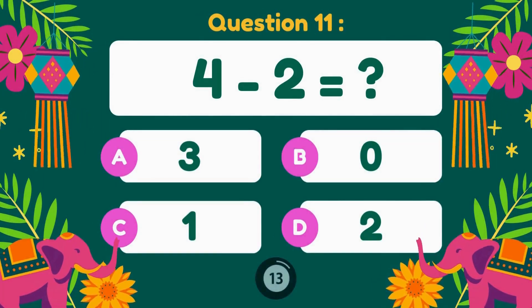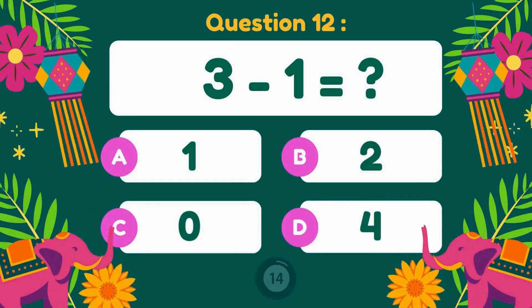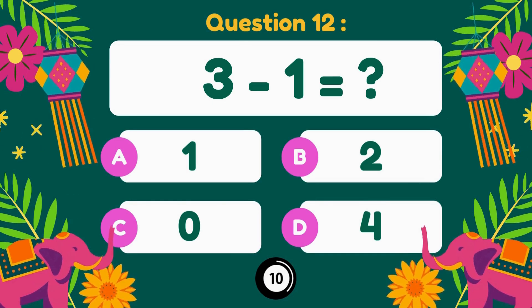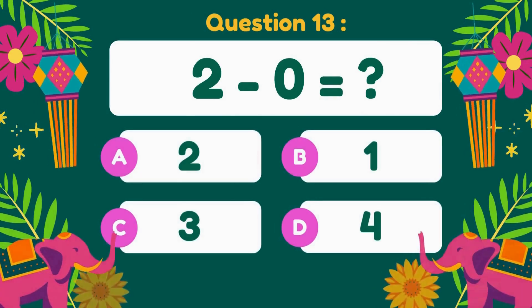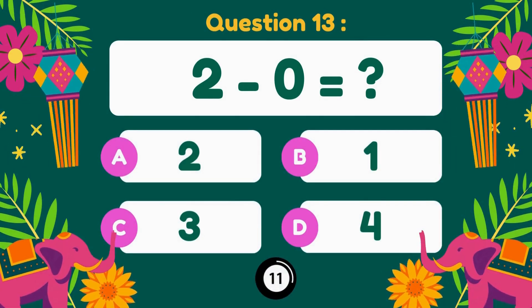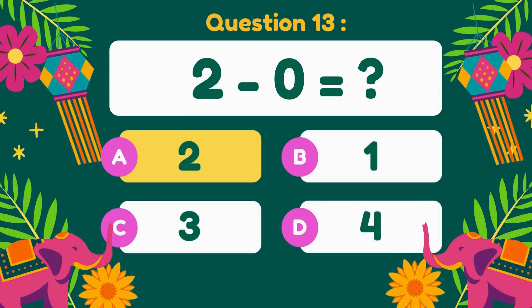4 minus 2. 4 minus 2 equals 2. 3 minus 1. 3 minus 1 equals 2. 2 minus 0. 2 minus 0 is 2.